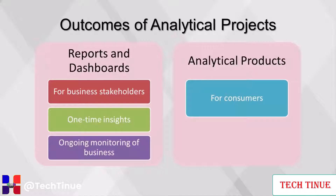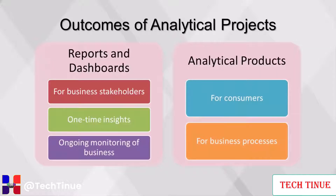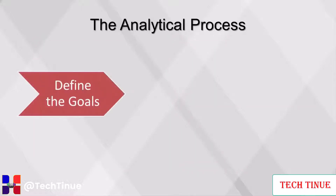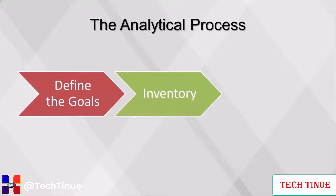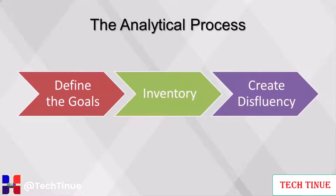Analytical products can take the form of features that offer a better experience for consumers. For instance, Amazon has an automated algorithm that determines products you might like to buy. Analytical products can also be built to make internal business processes more efficient — an example is how credit card companies test every transaction for the probability of fraud. An analytical project should start with goals well defined. Very rarely are projects started to simply explore the data. Collecting an inventory of all the relevant data sources is also an important step at the beginning of a project.